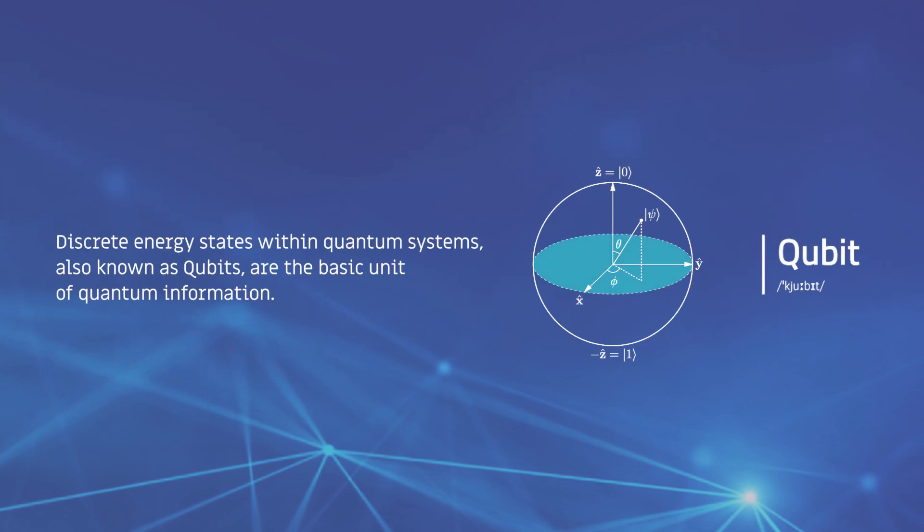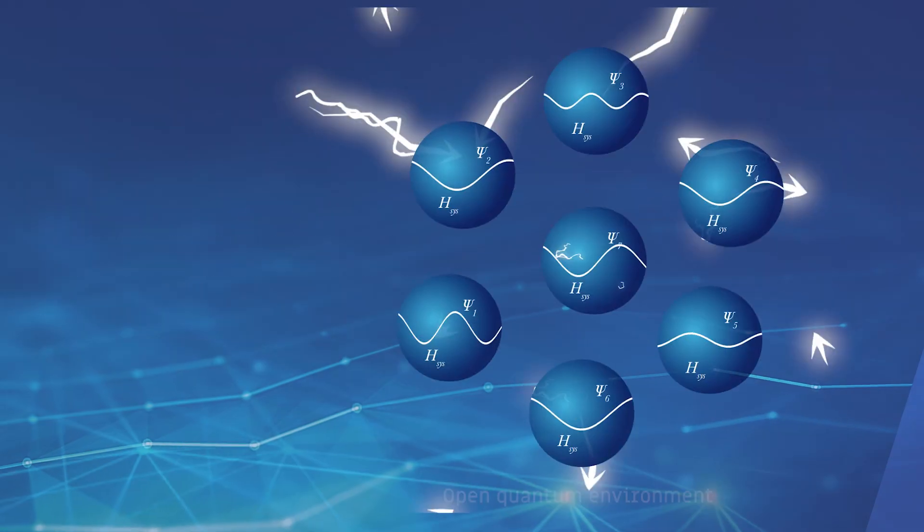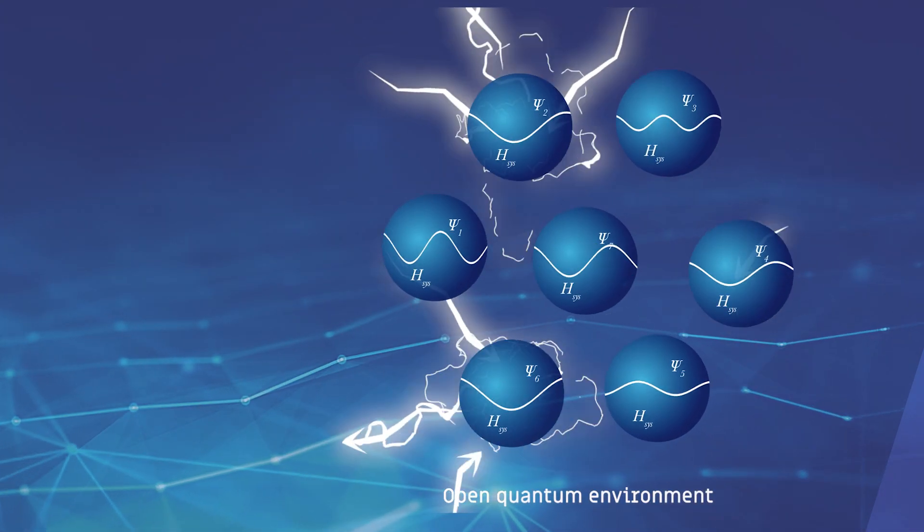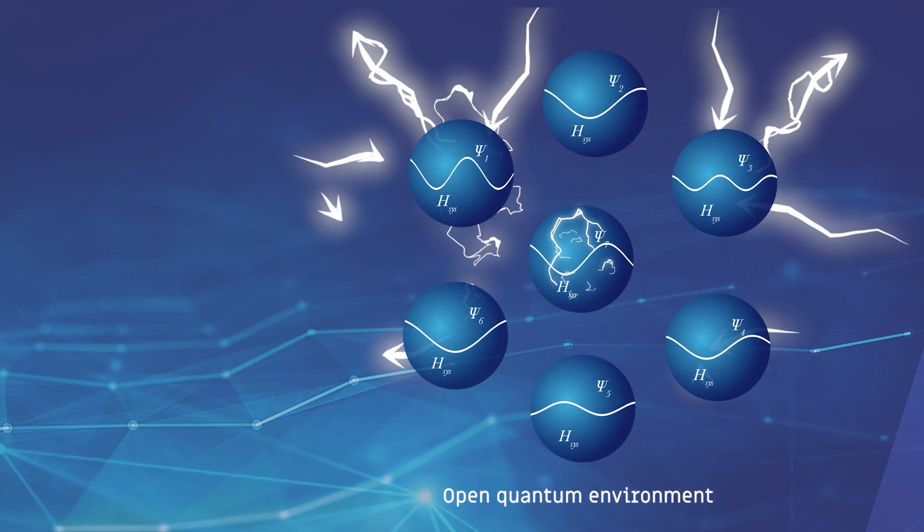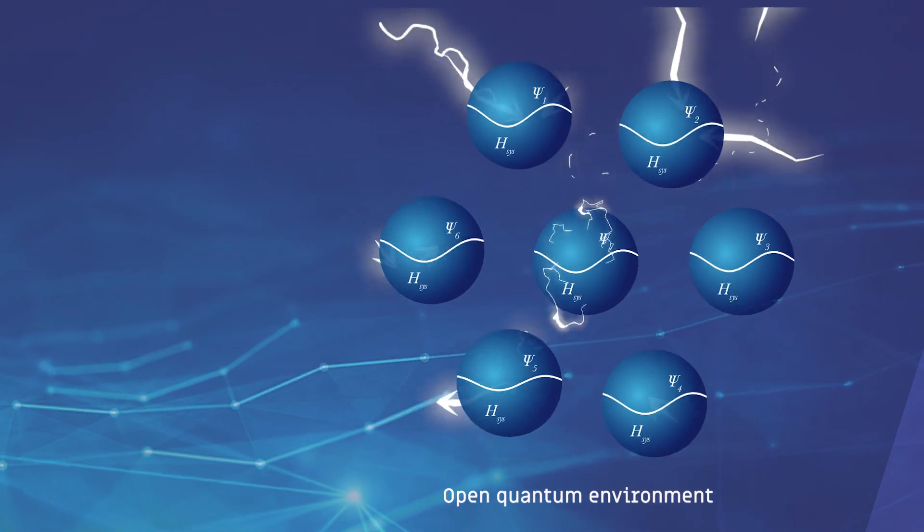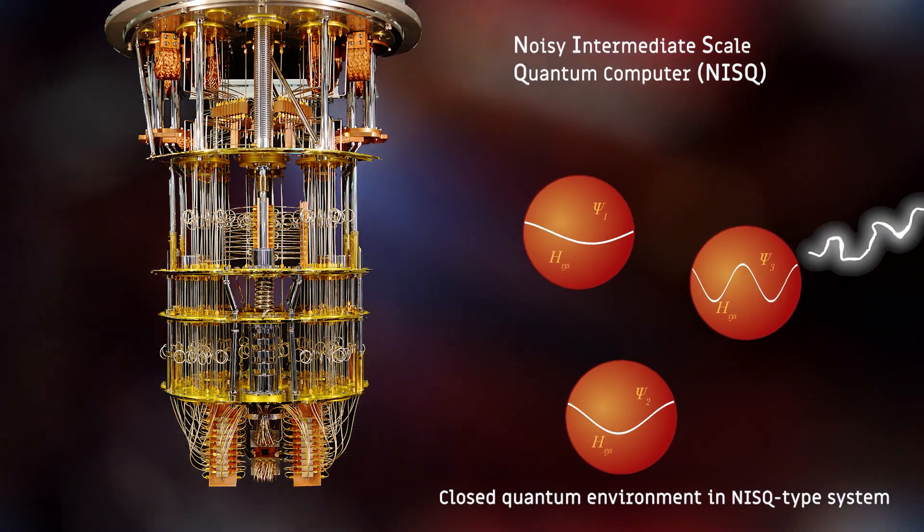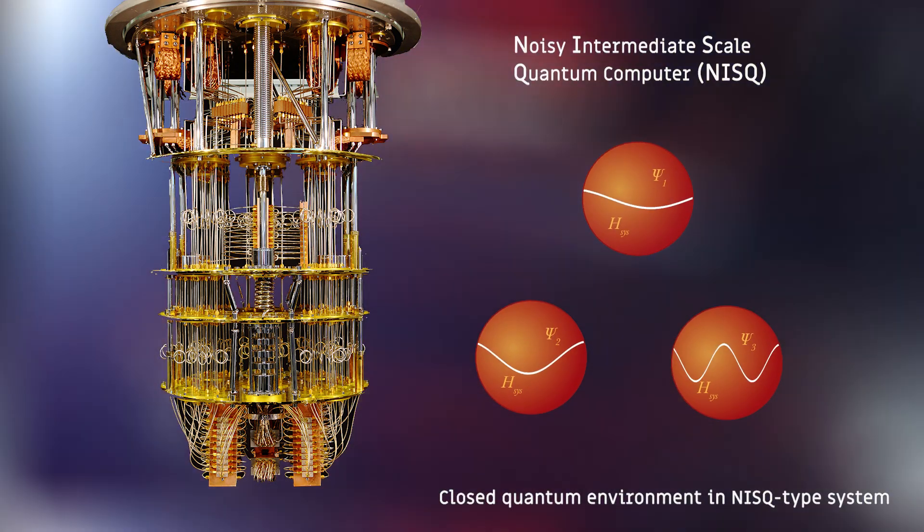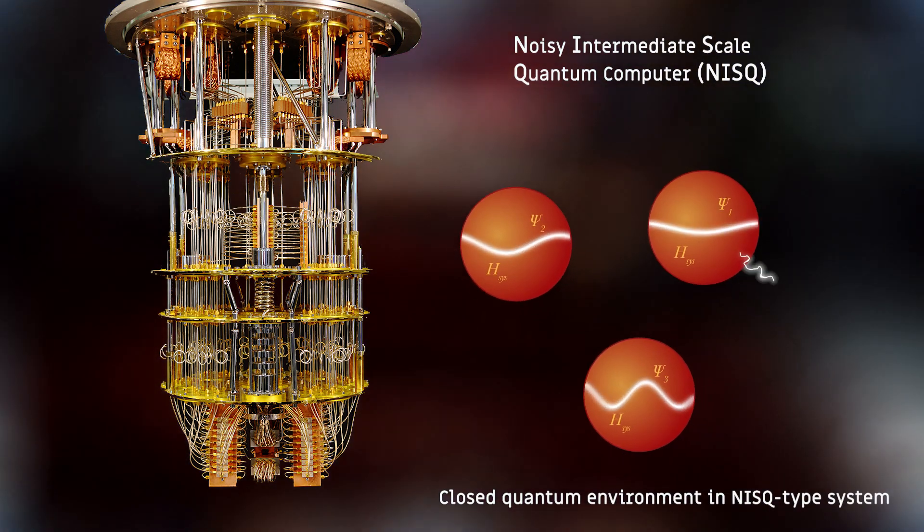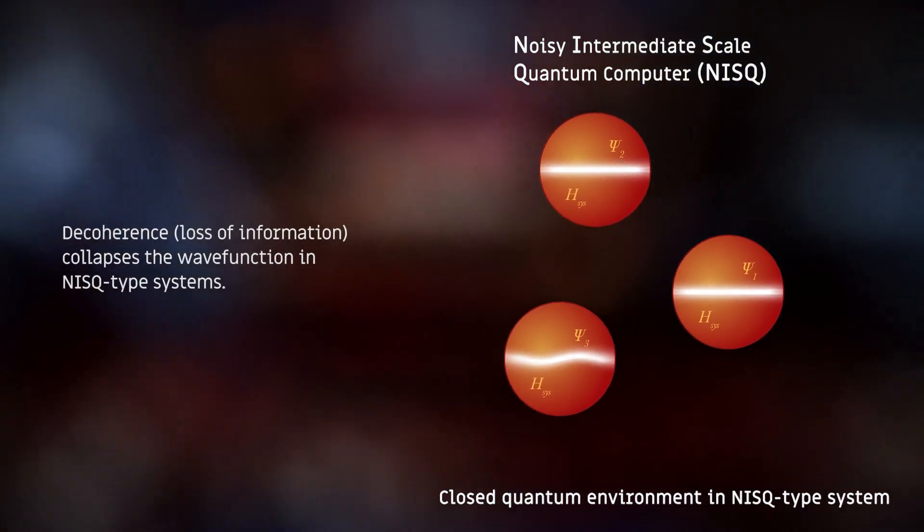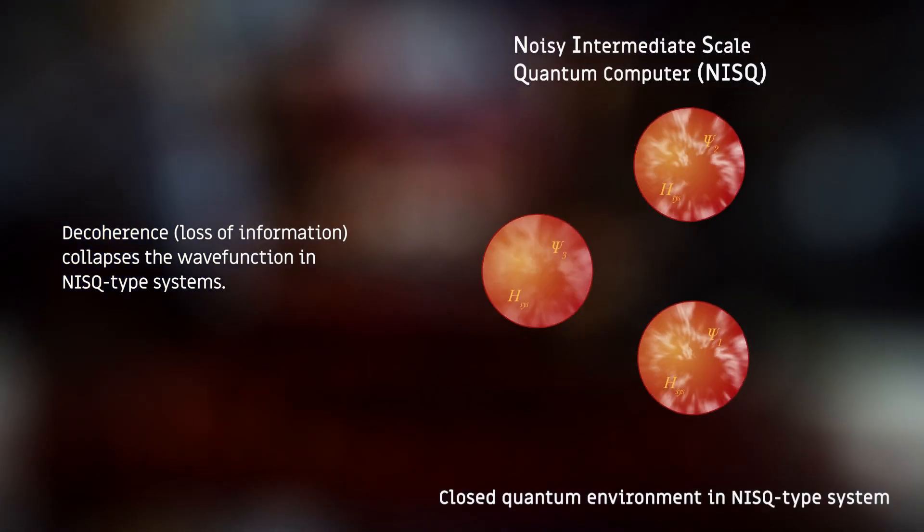Inherently, the discrete energy states within all quantum systems interact with the environment freely as they evolve in time. As such, they are considered to be naturally open, and as a result, in most of today's current quantum architectures, the so-called noisy intermediate scale quantum or NISC designs, this interaction with the environment causes a loss or decoherence of the energy states, resulting in the loss of information.